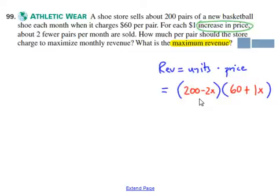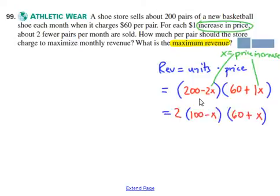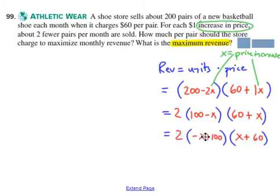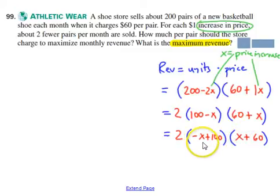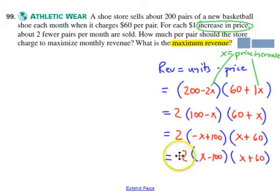The x values turn out to represent a price increase each time you step up in price. Like in example 8, factor out what you can from each binomial. From the right you can't factor anything out other than 1, but from the left you can factor 2 out. I recommend spinning these around to (100 minus x) and (60 plus x) — I simply reverse their positions because now it should look a fair bit like intercept form. To get the x values positive, factor a negative out of the left binomial, and you end up with negative 2 and (x minus 100).